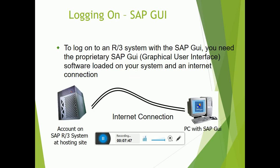To log on to an R3 system with SAP GUI, you need to install the SAP graphical user interface software on your system and have an internet connection. With SAP GUI on your PC, you can log into a system hosted on another layer — the database and application layer.